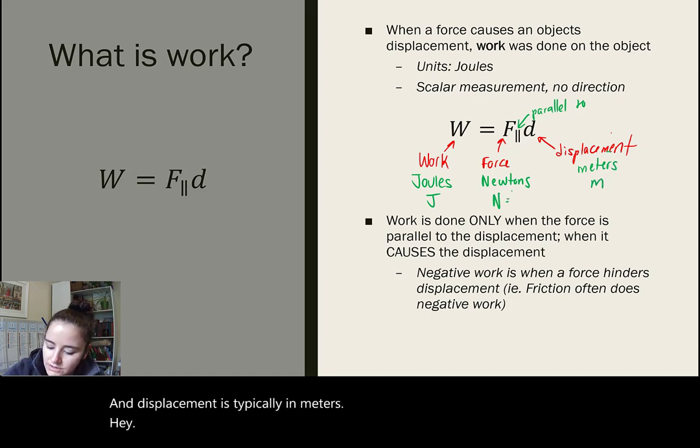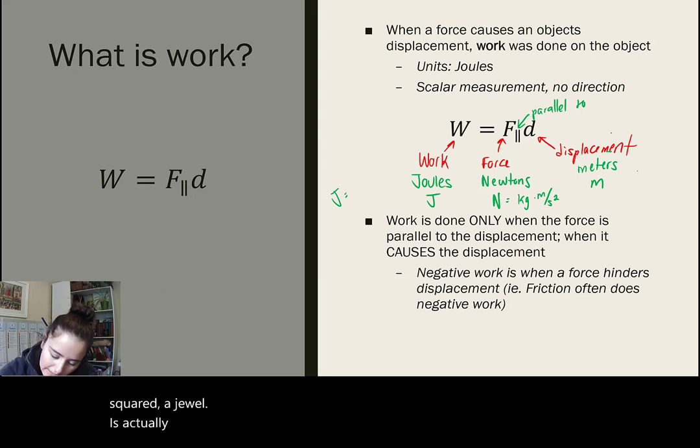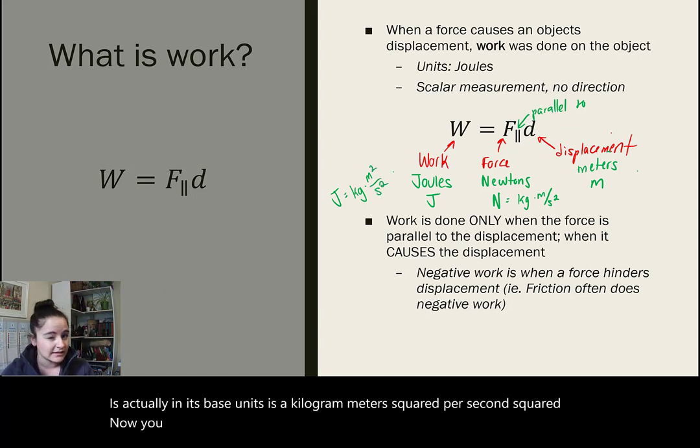You might remember that a newton is a kilogram meter per second squared. A joule is actually, in its base units, a kilogram meter squared per second squared. You might recognize these units as the units of energy, and we'll be talking about the connection between work and energy soon.